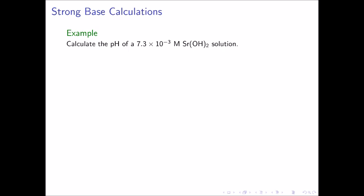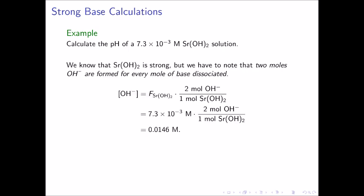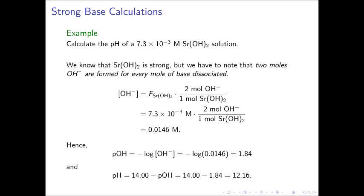In this next example, we're going to come across a situation that is unique to strong bases. Let us calculate the pH of a 7.3 times 10 to the negative 3 molar strontium hydroxide solution. We know that strontium hydroxide is strong, but we have to note that 2 moles of hydroxide ion are formed for every mole of base that dissociates. For this reason, the hydroxide ion concentration is equal to the formal concentration of the strontium hydroxide, multiplied by the ratio of 2 moles of hydroxide to 1 mole of strontium hydroxide. This gives 7.3×10⁻³ times 2, resulting in a hydroxide concentration of 0.0146 molar. The pOH is the negative log of 0.0146, which is equal to 1.84. And finally, the pH is found to be 14.00 minus 1.84, or 12.16.